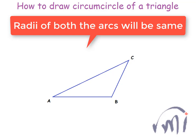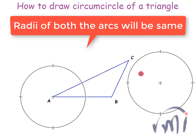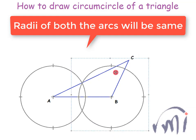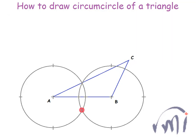So let this be the first circle and let this be the second circle, and the line joining these two points where these two circles intersect each other will be the perpendicular bisector of the side AB of the triangle. So let me extend it. This will be the perpendicular bisector of AB.